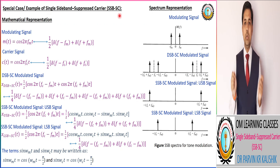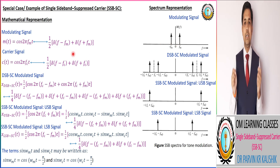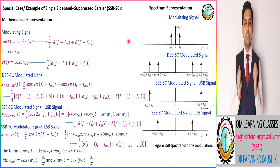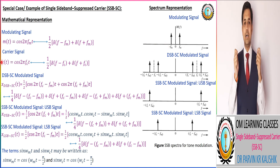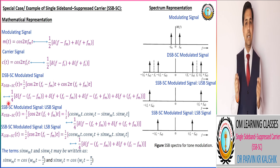Similar to DSB-SC modulation technique, we consider a special case with modulating signal m(t) = cos(2π·fm·t), whose frequency domain representation has two impulses corresponding to the modulating frequency. The carrier signal corresponds to cos(2π·fc·t). Multiplying both the modulating signal and carrier signal, we get the DSB-SC modulated signal that has an upper sideband as well as a lower sideband, as shown in the figure.